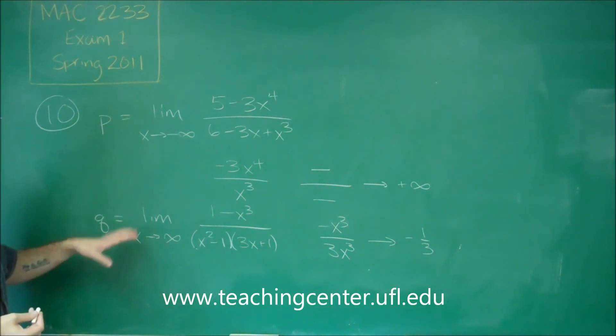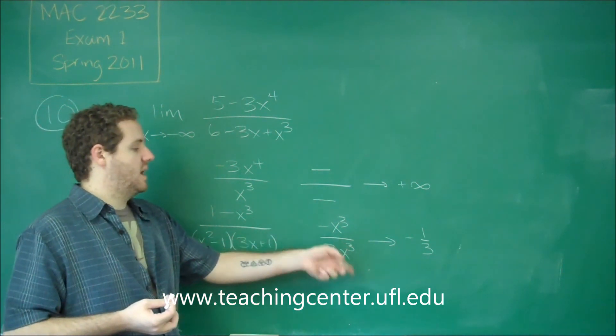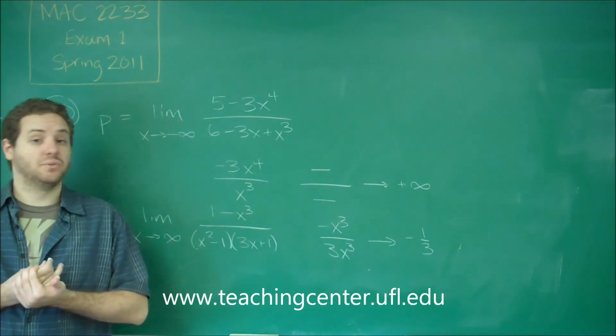So the last scenario I just want to go over real quick that didn't come up in this. If the bottom has a higher degree than the top, it's automatically just going to be zero.